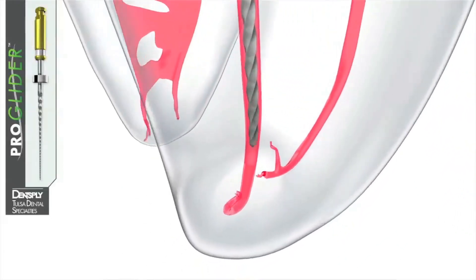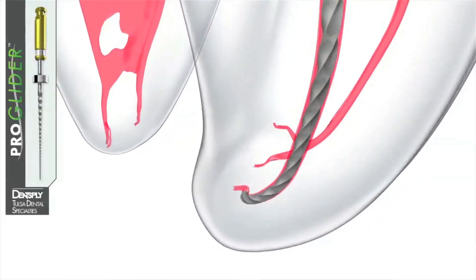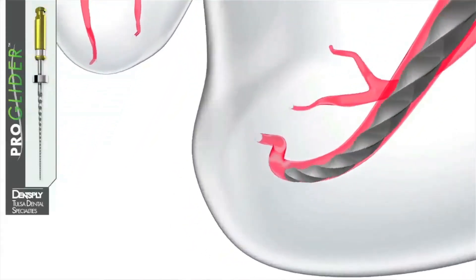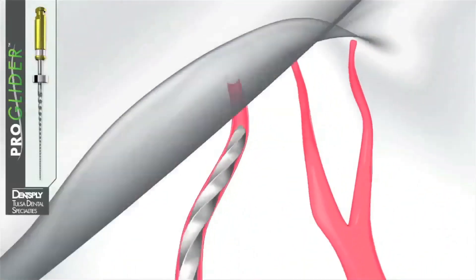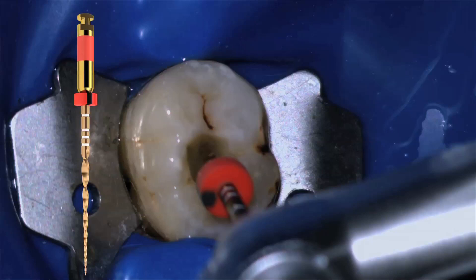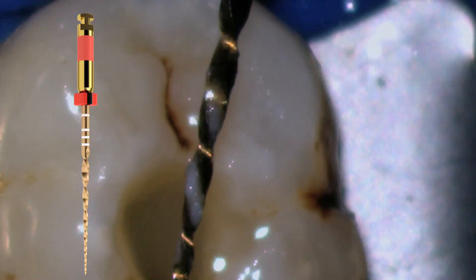After we have completed our glide path with ProGlider, we will take WaveOne Gold and go in increments of three millimeters inside the canal. That's the amplitude stroke — every three millimeters. We will remove the file, observe the file if it has dentinal debris, clean those dentinal debris, and irrigate. Every time that we irrigate, the needle will be penetrating deeper and deeper into the canal.